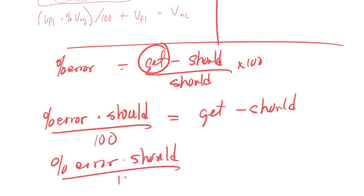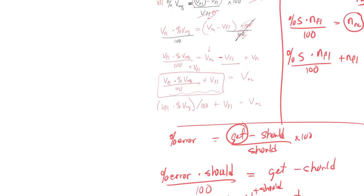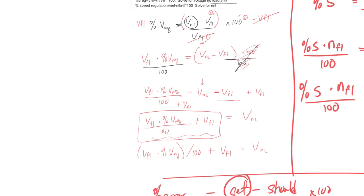There might be an easier way to do it. Oh, I forgot to go plus should. There might be an easier way to do it. Like if I look at this one, one thing it could have done right off the bat. So percent voltage regular equals VNL minus VFL times 100 divided by VFL.